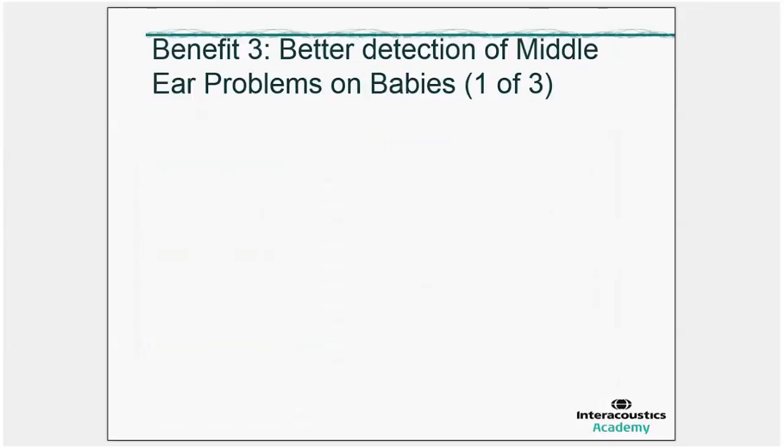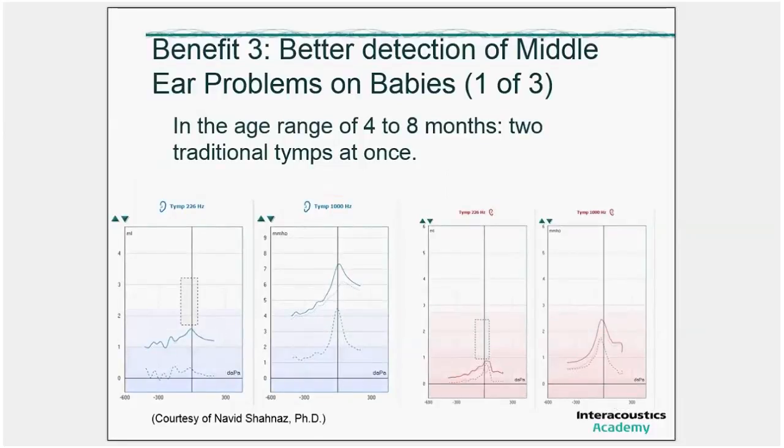Benefit number three. This is about testing on babies and small children. We split up the benefits in three slides. Benefit number one is if we stick to the traditional tympanometry, that at a certain age range, you are not certain which probe tone frequency to use. And people usually talk the range between four and six months. We put eight months because some babies get born far too early. Benefit one with babies is that we get 226 Hz and 1000 Hz at the same time with one single effort. And I have heard from clinics testing wideband tympanometry in the early days, they wanted the system just for that reason.